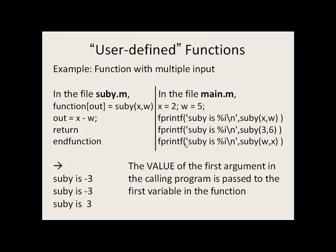We have a third fprintf statement, subby is percent i. We print off the value of the first item in this list. w is 5, so 5 will get passed to x, the first item in the argument list in the function. The value of x, which is 2, gets passed into the second variable w. What gets passed down is not the variables themselves, but the values of the variables. So w is 5, x is 2 — 5 and 2 are passed into x and w. 5 minus 2 is 3, which gets passed back as output to the main program, and subby is 3 is printed on the screen.